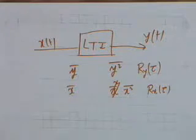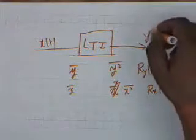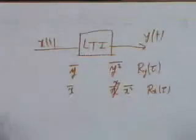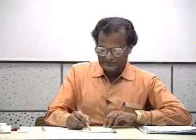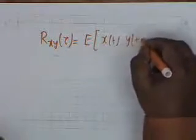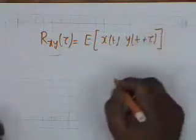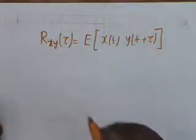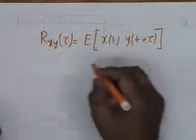The next statistical description is the cross-correlation between Y and X. The cross-correlation is defined as R_XY(τ) equal to the expected value of X(t) and Y(t + τ). I will do one of the derivations; the other you can do yourself.